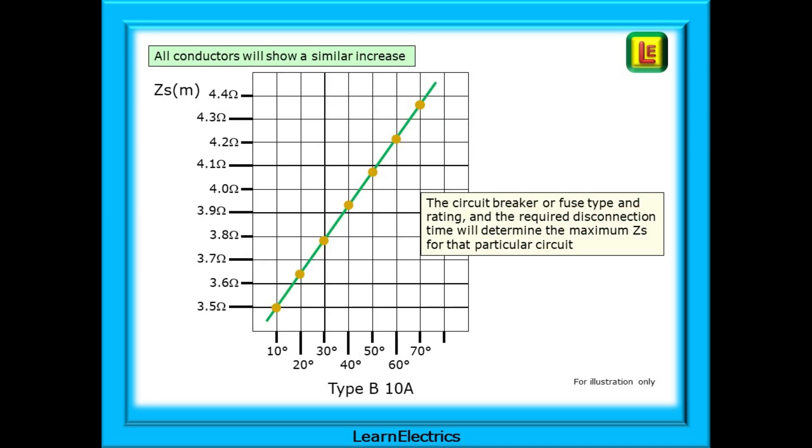And this is a similar graph constructed for a 10 amp type B breaker. All conductors will show a similar increase but with different numbers. The circuit breaker or fuse type and the rating and the required disconnection time will determine the maximum ZS for that particular circuit.